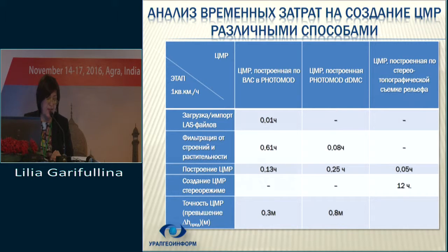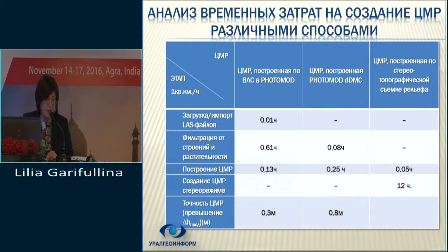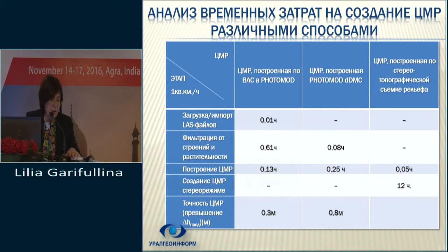The table shows that the accuracy of DSM is very good, and the filtration process took about 12 hours. It is possible to speed this up using the distributed processing module, which allows maximum use of multi-core processors and network resources. Filtration of points from buildings and vegetation could have been done 30 times faster — in 30 minutes instead of 12 hours. Using a local computer without distributed processing modules took five hours, but distributing the task over several cores would reduce that duration. The accuracy of the elevation matrix satisfies regulatory requirements for 1:2000 scale and less.